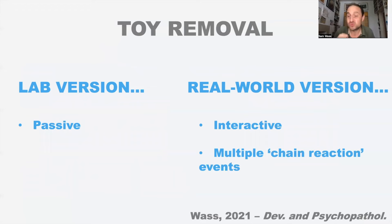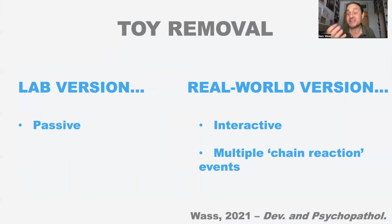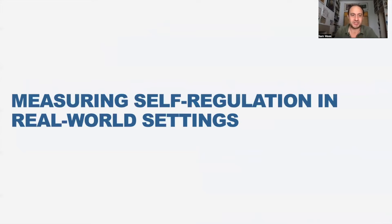What are the differences between this real-world toy removal - as any parent of a toddler would recognise - and the lab version? The lab version is passive: the child doesn't trigger any of the events. It's all done off a stopwatch by an experimenter. Whereas the real-world version is interactive - Freddy started off that episode and contributed to all the individual things that happened on top of the original stressor. That's the second big difference: in the lab we have one stressor; in real life we get a chain reaction of cascades - one thing causes something else, which causes something else.